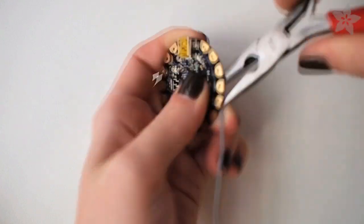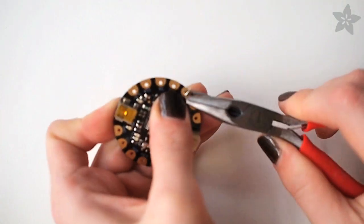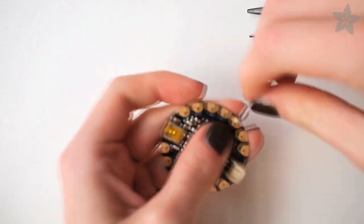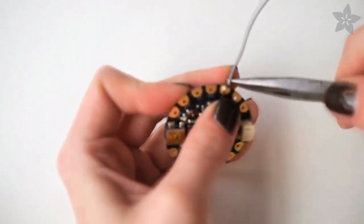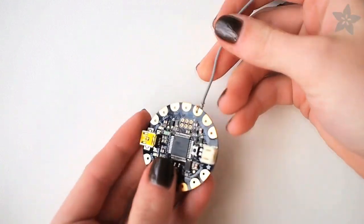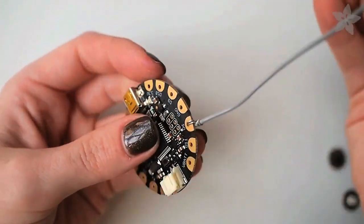Insert the wire into the hole marked D6 on the Flora and wrap it around to make a tight connection. Wrap the wire around itself a few times and cut off any excess to make a nice tight connection that doesn't wiggle.